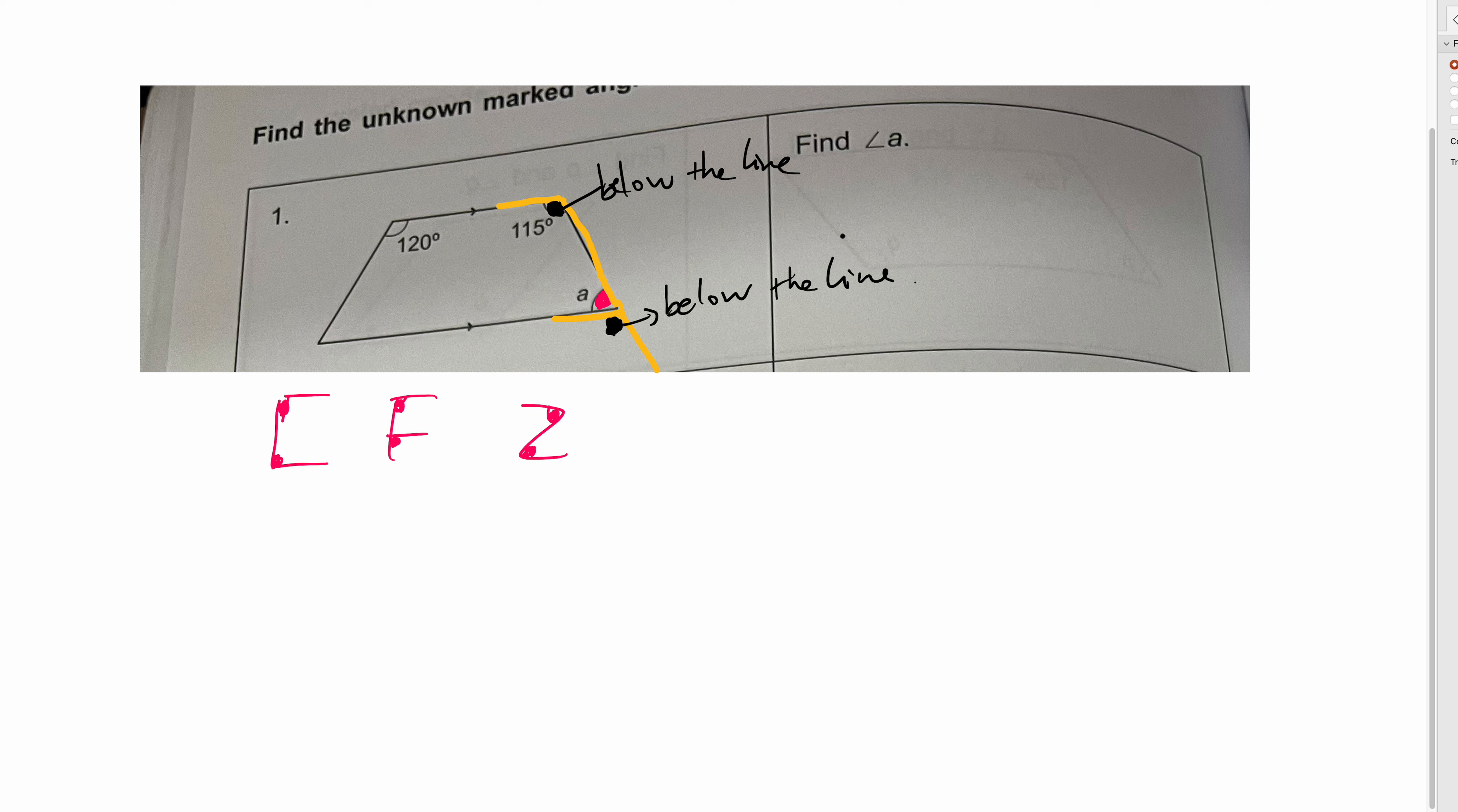And by the way, F, so if you want to use F, the rule is called corresponding angle. The meaning of corresponding means same position. So if this is below the line, this has to be below the line. So that means this is 115. So if this is 115, how do you find a then?